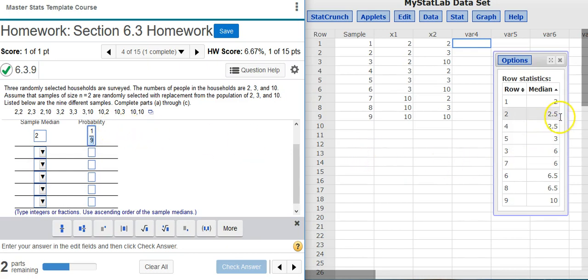The next value I see in my median column is 2.5. So down here under the drop down menu selection, I'm going to select 2.5. I have 2 of those.